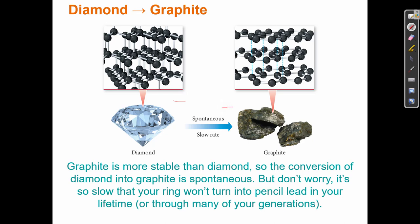So we have a situation where diamonds are higher in energy and graphite is lower in energy — not much, but a little bit. So diamonds are turning into graphite slowly. But look at the reaction coordinate diagram: the activation energy for this process is enormous. In order to turn diamond into graphite — which is thermodynamically favorable because graphite is more stable — all those bonds have to break, and look how much energy is required.